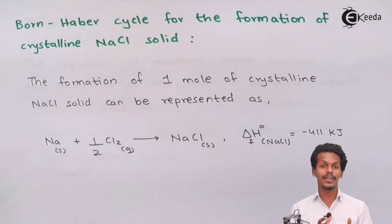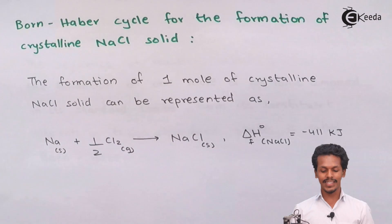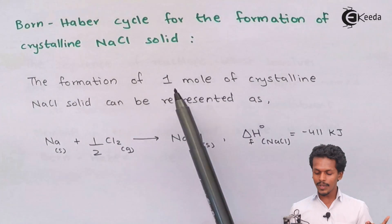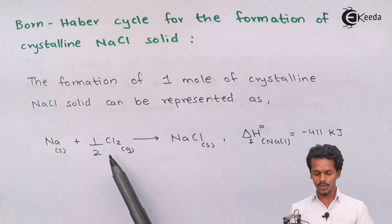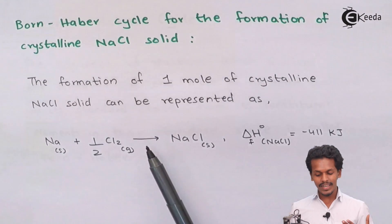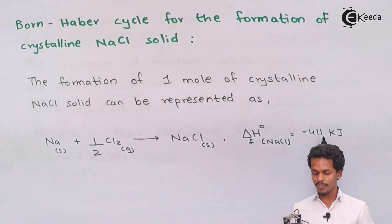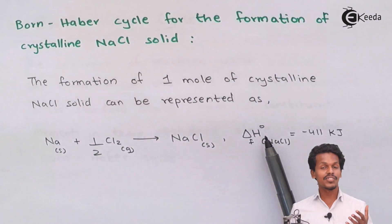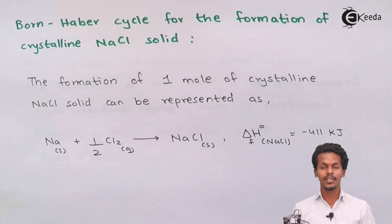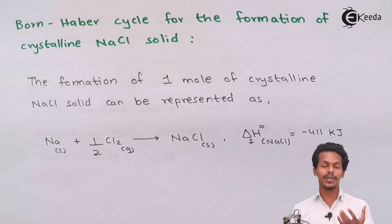Let us calculate the lattice energy of NaCl. The Born-Haber Cycle for the formation of crystalline NaCl solid can be followed in various sequences. The formation of one mole of crystalline NaCl solid is represented as: Na(s) + ½Cl₂(g) → NaCl(s), where the standard enthalpy of formation ΔHf° = −411 kJ. This means 411 kJ of energy is liberated during this process.